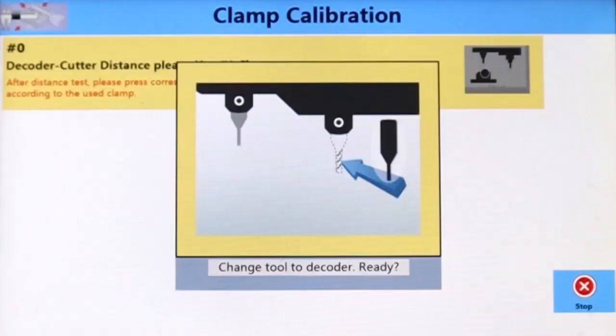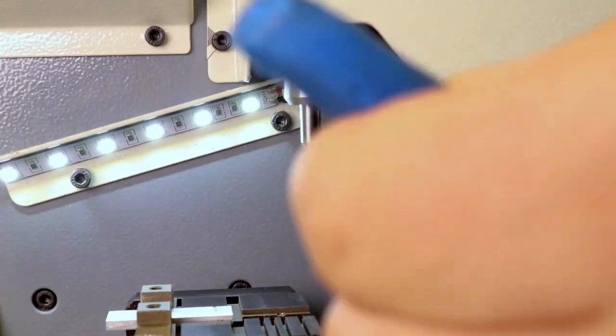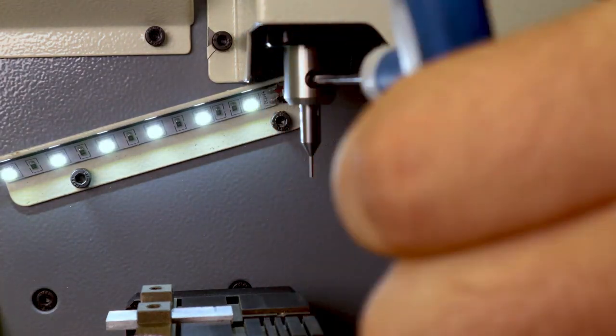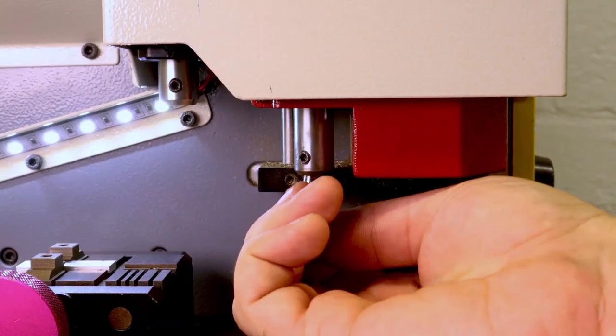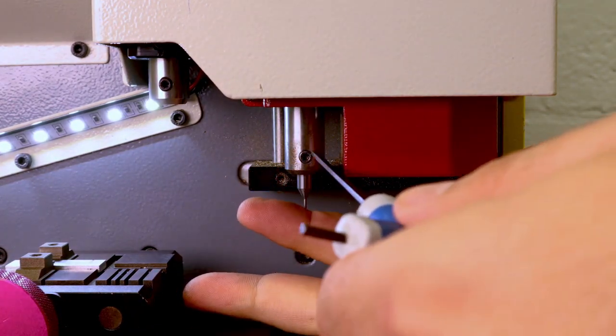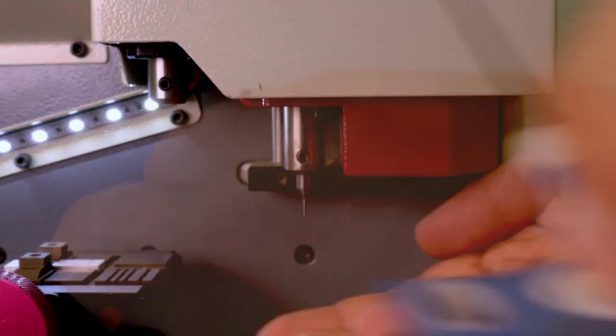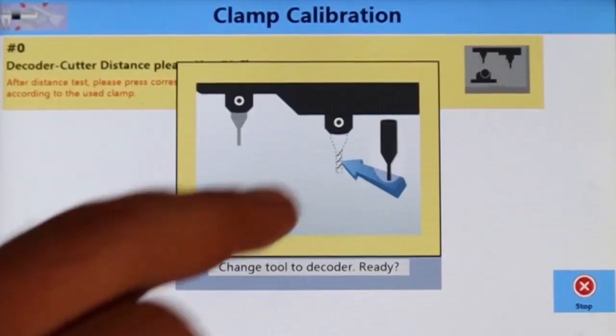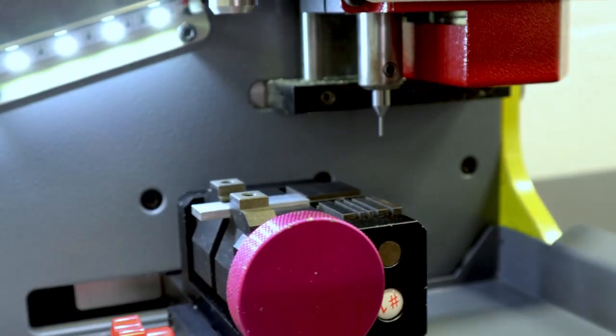Once this step is completed, you will be notified to change the calibration tool to the decoder. To change out the tips, simply use a hex key wrench. Once completed, tap on the notification and the decoder calibration will begin.